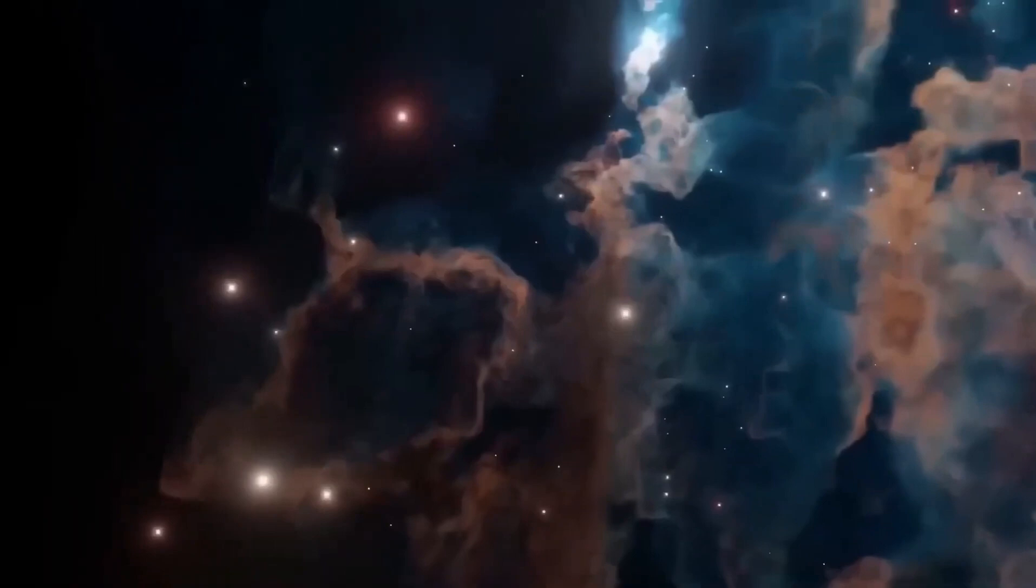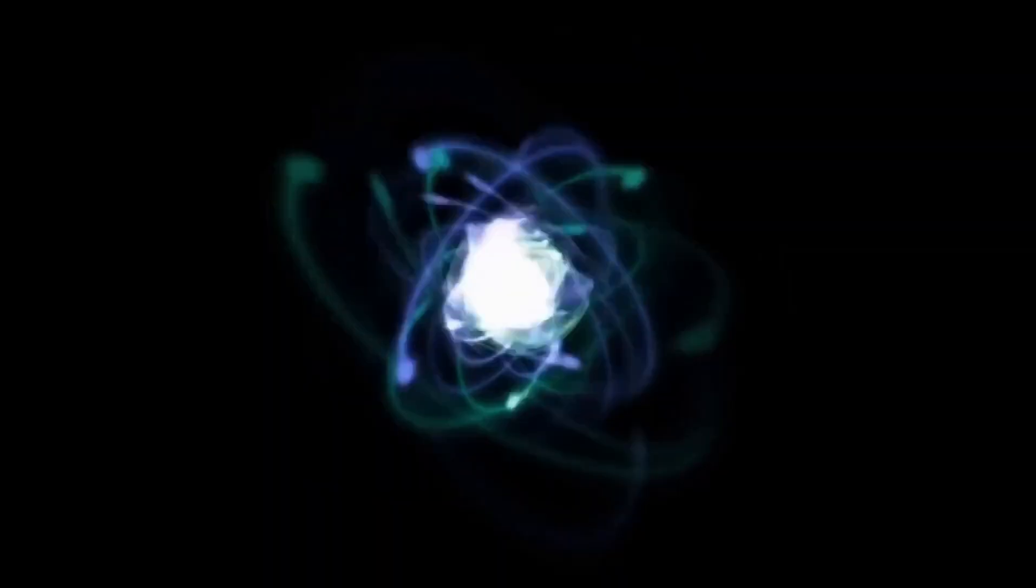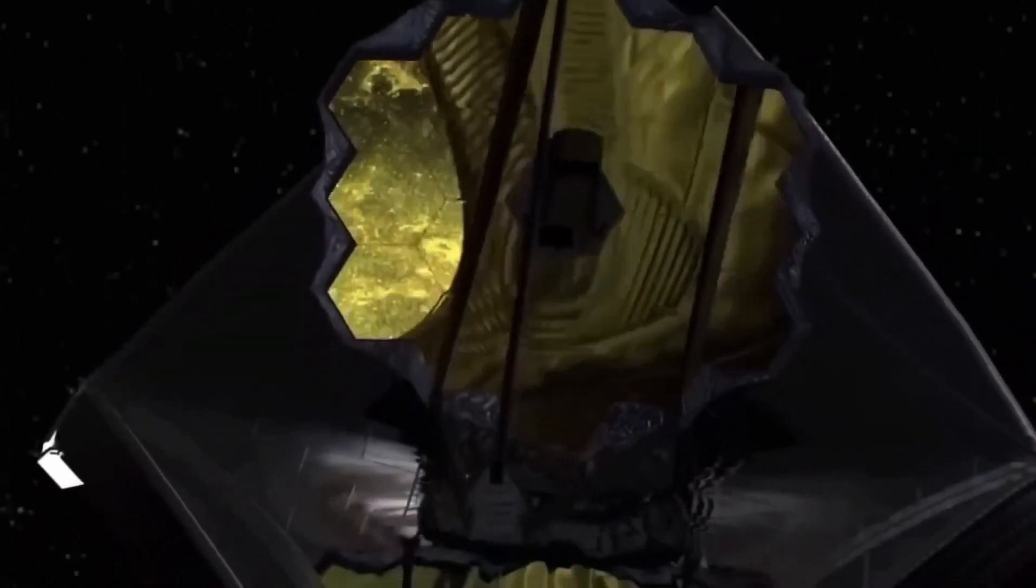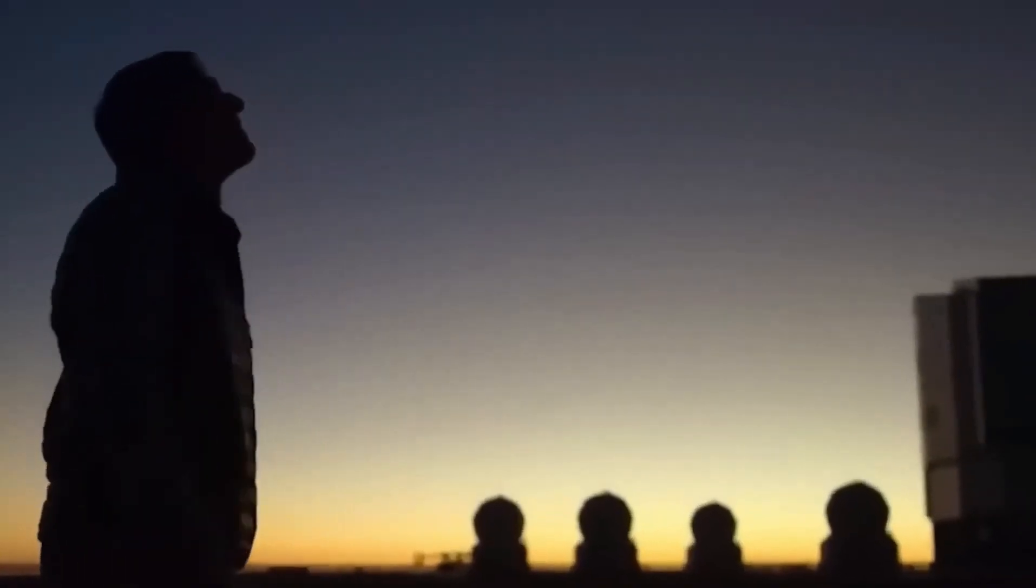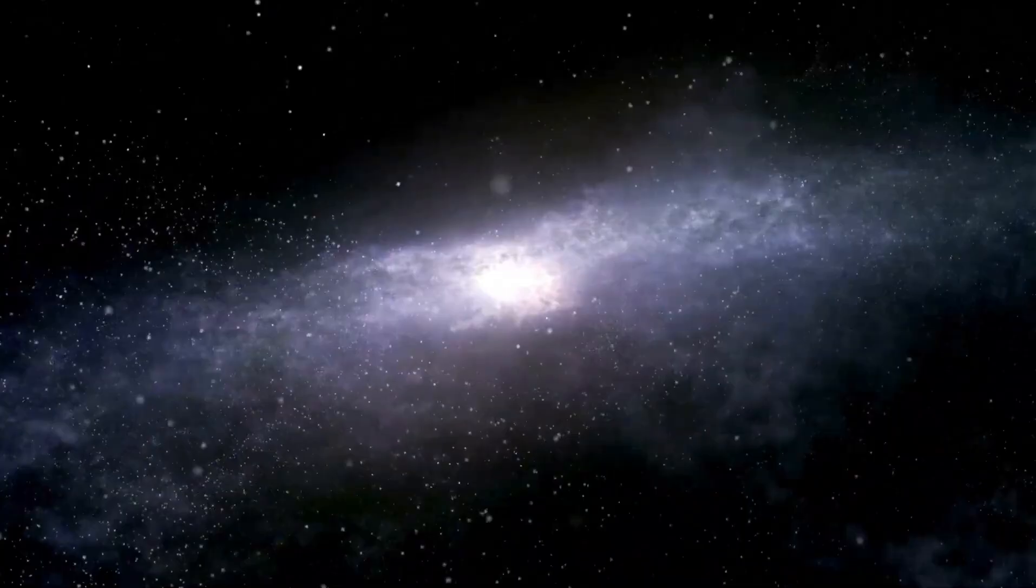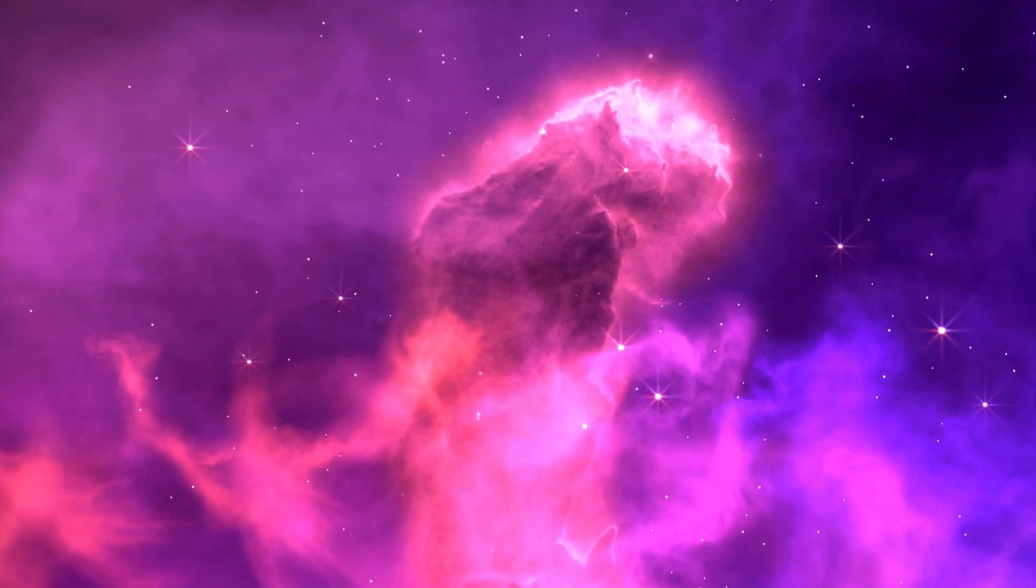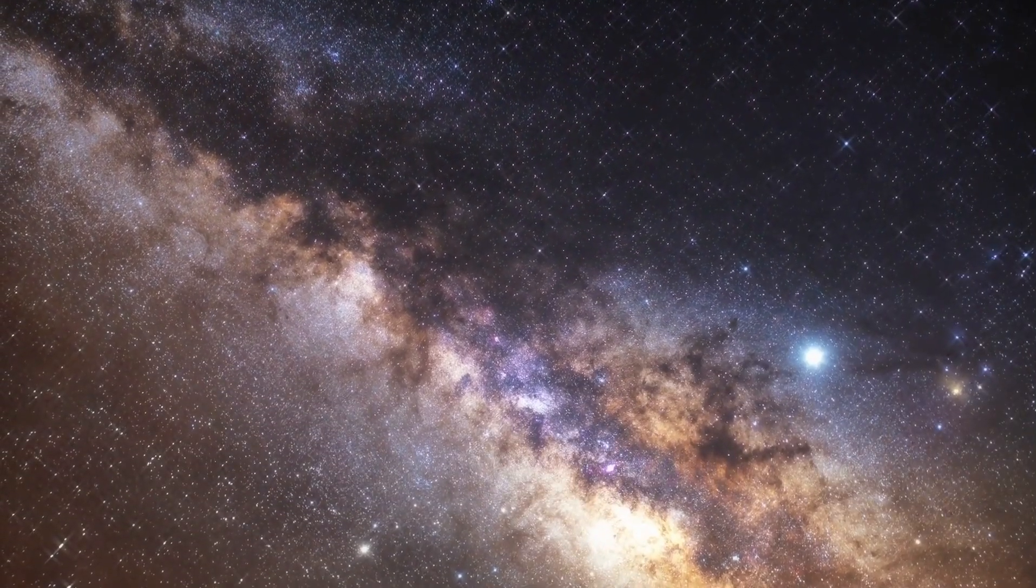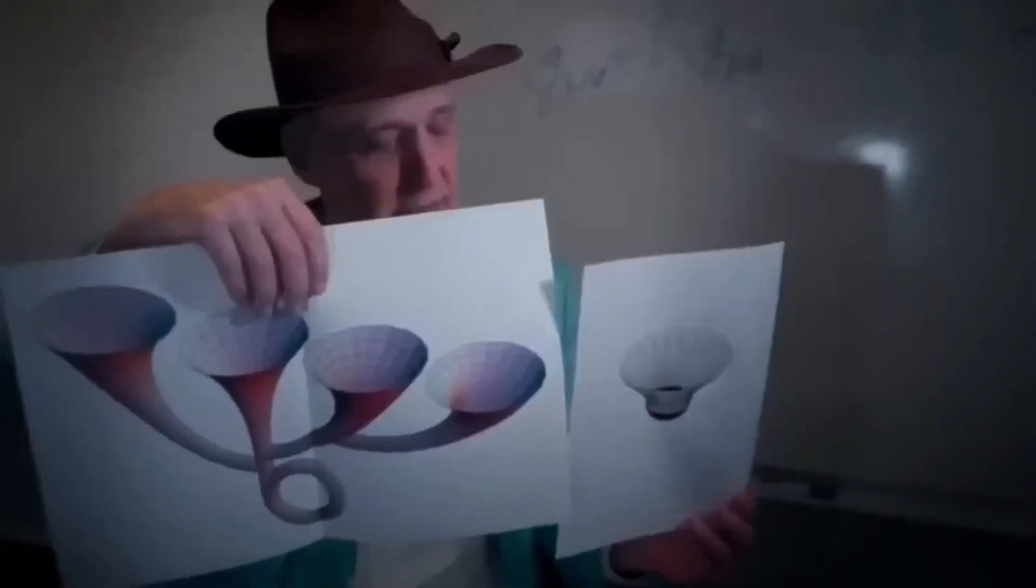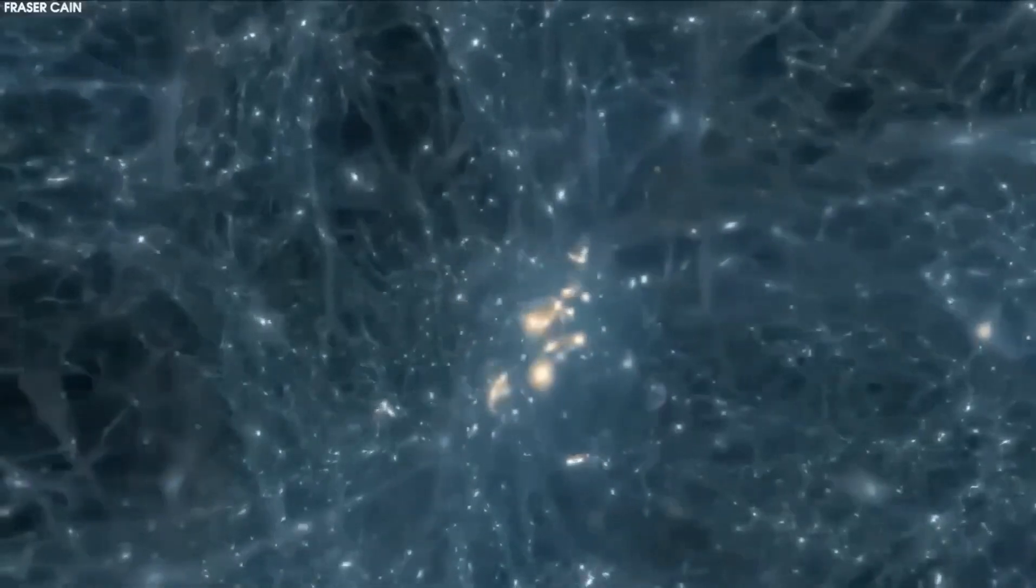The second theory suggests that the universe is finite, but it doesn't have a clear edge either. This means it's similar to a giant ball, and if you keep going in any direction, you'll eventually loop back to where you started. The third theory is the multiverse theory, which suggests that our universe is just one of many. Imagine a bunch of parallel universes, each with its own set of rules and properties. These universes could be completely separate from each other or somehow connected.